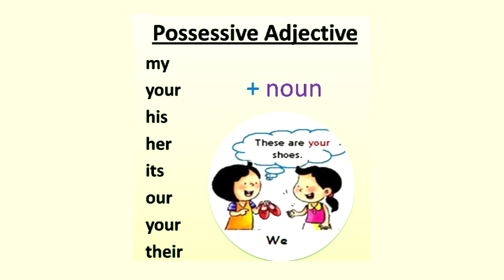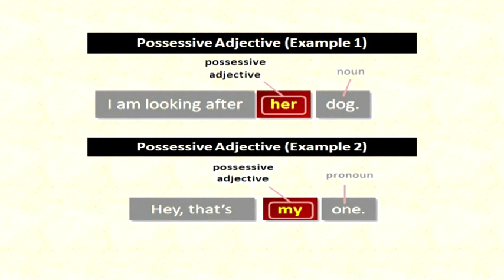Like: these are your shoes. The word shoes here is the noun, and the word your tells us whose shoes these are. So the word your becomes our possessive adjective. Similarly: I am looking after her dog. Here dog is a noun, so the word her is a possessive adjective. See the next example: that's my one. Here the word one is a pronoun, and the word my is a possessive adjective. So, whenever we use any possessive adjective, it has to be used with some noun or pronoun.